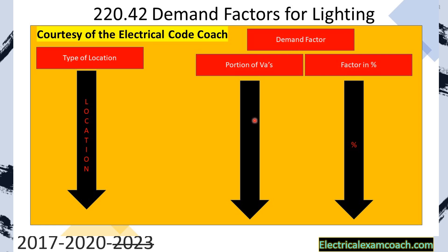In this column, it's the portion of the VAs. And then in this column, it is the demand factor in percentage. We're going to break this down one piece at a time and learn how we apply the demand factor to the three VAs per square foot and the 4,500 VAs for the small appliance and the laundry circuit.